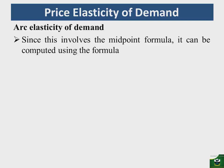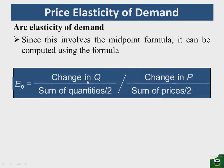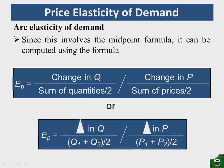Since the arc involves the midpoint formula, elasticity is computed as the ratio of the change in quantity demanded to the average of the two quantities, divided by the ratio of the change in price to the average of the two prices. We can write this as: ΔQ divided by (Q1 + Q2)/2, all divided by ΔP divided by (P1 + P2)/2.